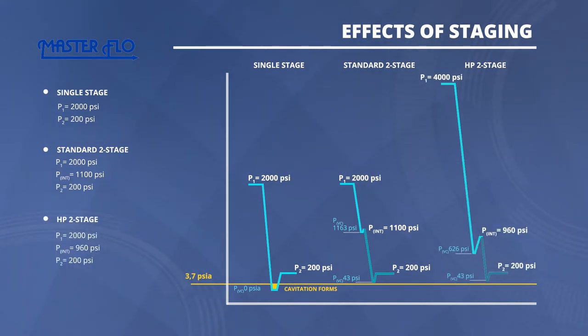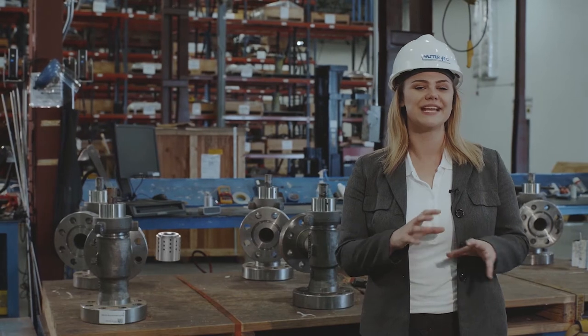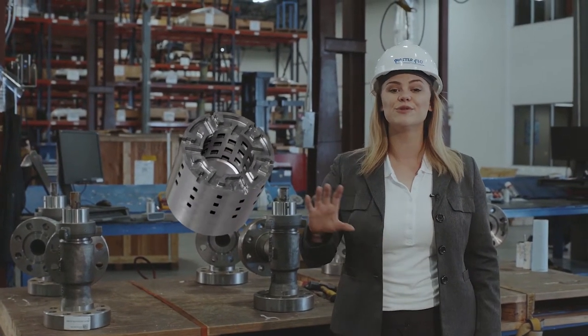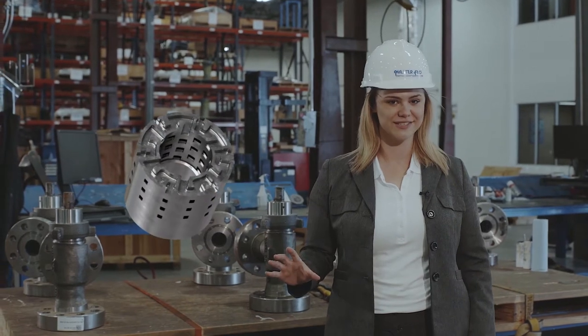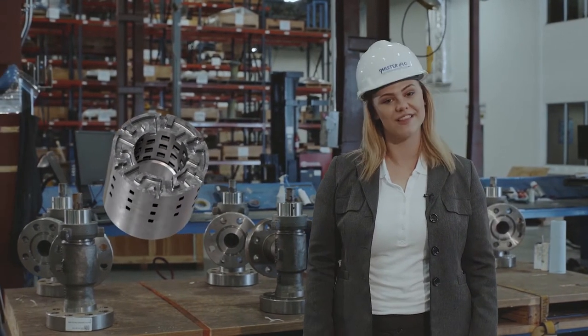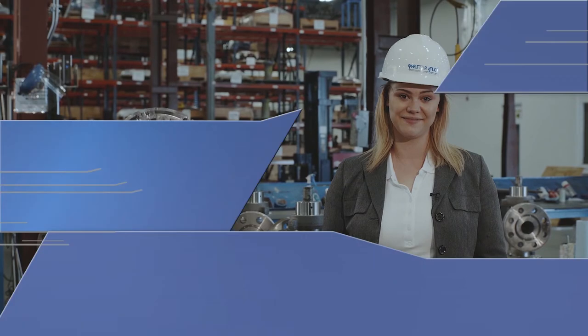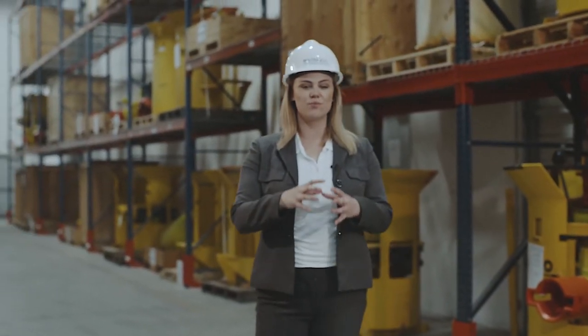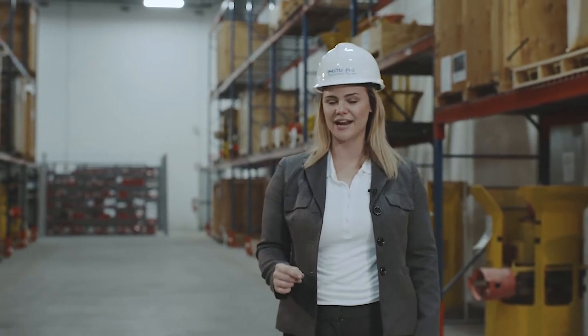When more than two stages are needed, a labyrinth-style trim is employed. It features an internal plug and a labyrinth cage that allows a smooth transition between cage ports, and controls the velocity throughout the labyrinth. These trims are available for liquid, gas, and multi-phase applications. The trim cage is compression-loaded and constructed as a solid element of tungsten carbide for durability and ease of service.